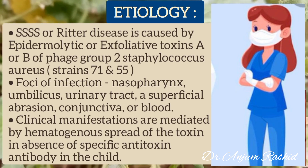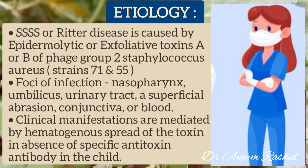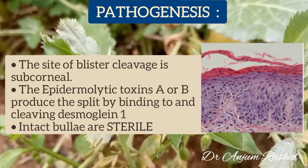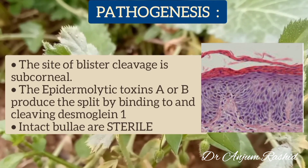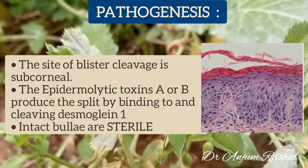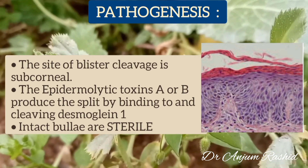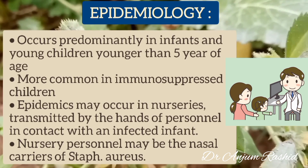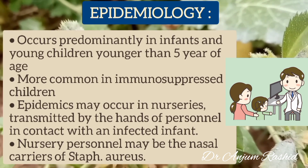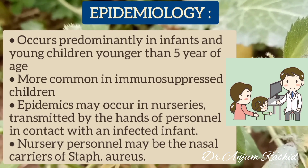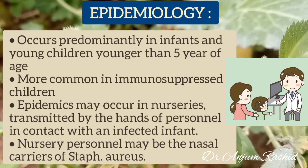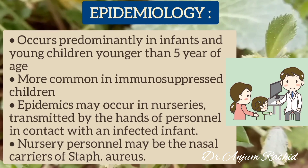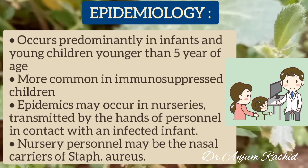The clinical manifestations are mediated by hematogenous spread of the toxin in the absence of specific antitoxin antibody in the child. Regarding pathogenesis, the site of blister cleavage is subcorneal. The epidermolytic or exfoliative toxin A or B produces the split by binding to and cleaving Desmoglein 1. The intact bullae in Staphylococcal scalded skin syndrome are usually sterile. This condition occurs predominantly in infants and young children younger than 5 years of age, and is more common in immunosuppressed children. Epidemics may occur in nurseries, transmitted by the hands of medical staff in contact with an infected infant. Nursery personnel may also be nasal carriers of Staphylococcus aureus.